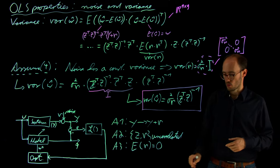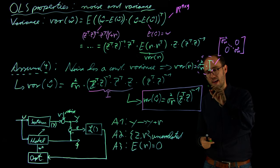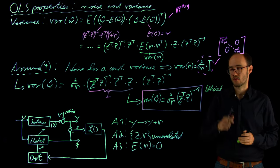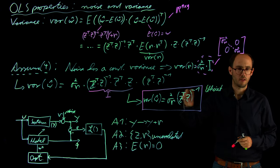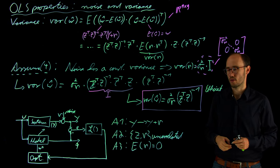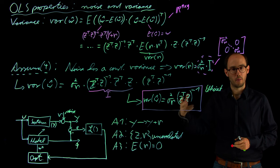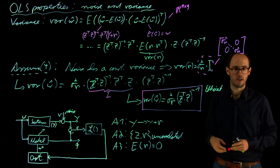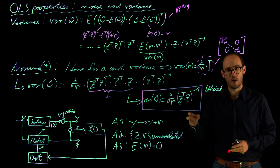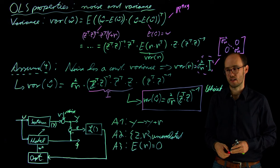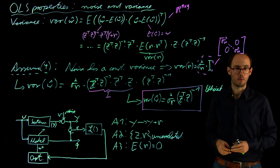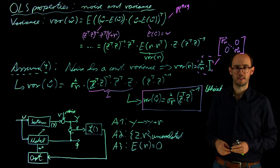We can also find — without proving it formally here — that the OLS estimator is also a so-called efficient estimator. This means you cannot find any other linear estimator which produces a bias-free estimate with lower variance than the ordinary least squares, which is why OLS is called efficient. What this means in practice we will see in more detail in the next video, where we consider different uncertainty measures using our simulative car example. See you then.